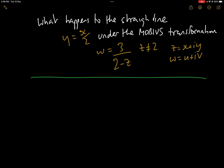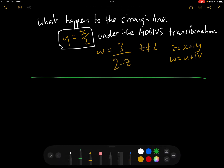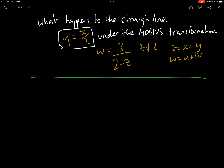This question asks what happens to the straight line y equals x over 2 under the Möbius transformation w equals 3 over (2 minus z), where z is not 2 and z and w are both complex numbers — z equals x plus iy and w equals u plus iv.